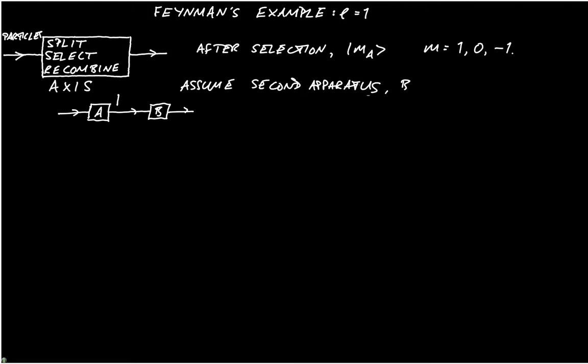And after A, then we will have the system in state ket M, A. So it's an eigenstate of the angular momentum projected along the axis in A. And after B, it'll be in the state ket M, B. And if we wanted to, we could write those as vectors, say, little a and little b. And again, after B, we would be in the state ket B, with M again equal to plus 1, 0, or minus 1.